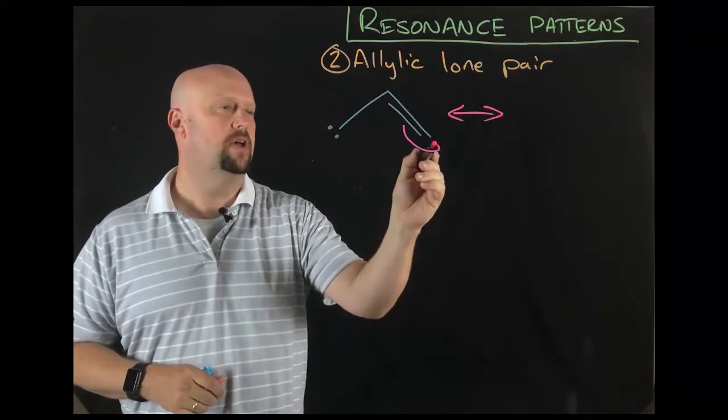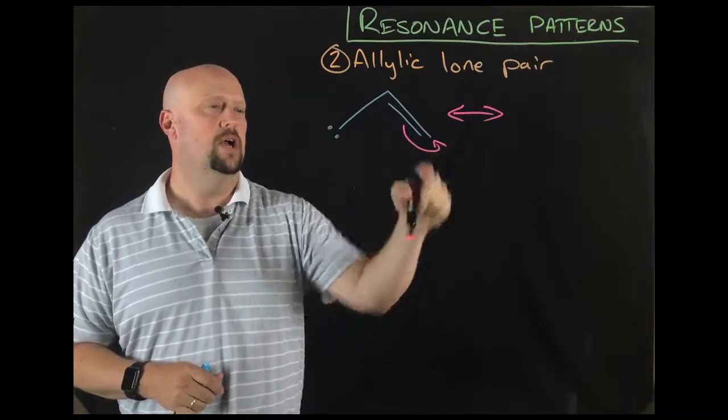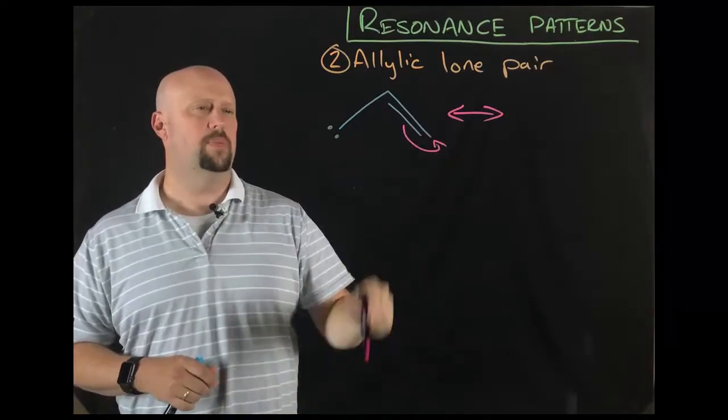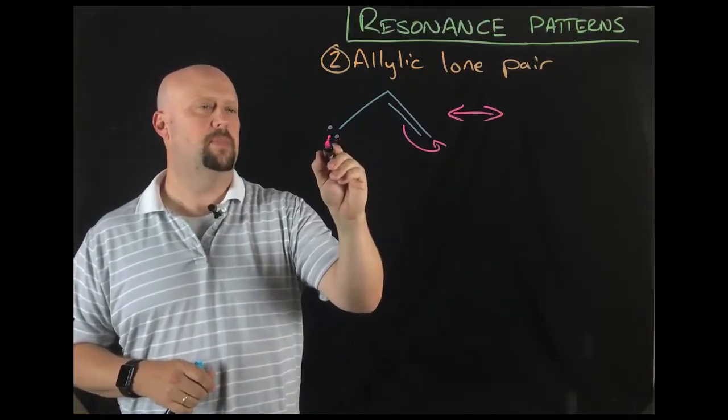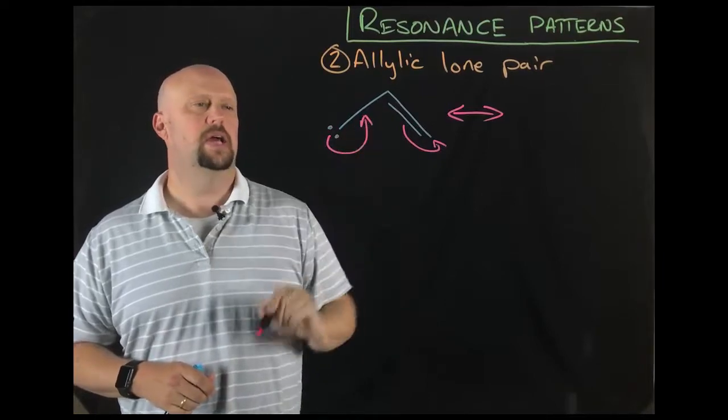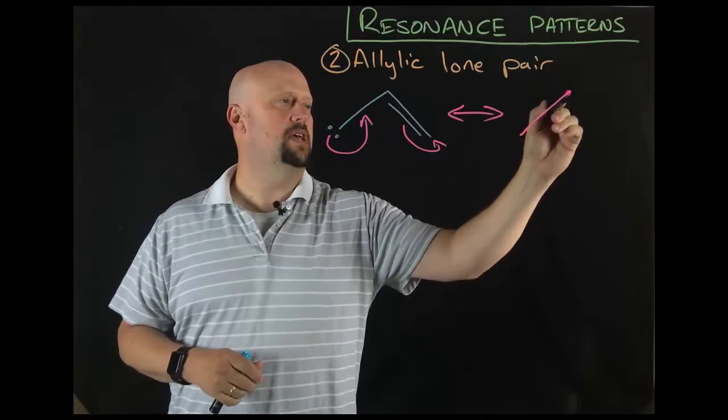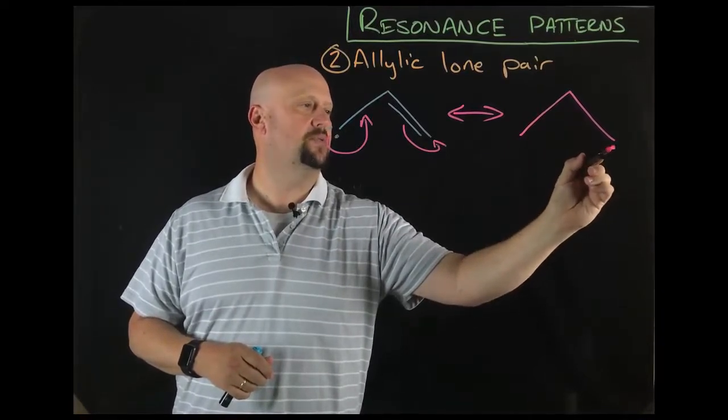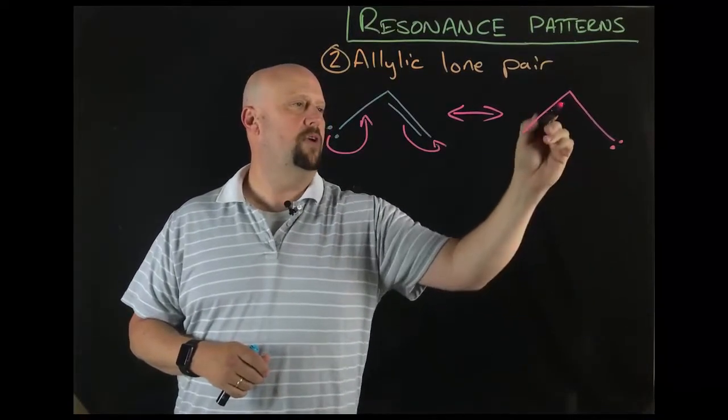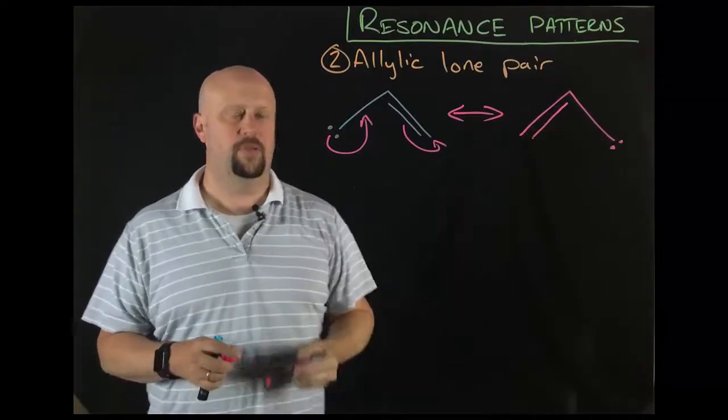Well, here's the way this works. This is actually going to require two curved arrows, whereas the allylic cation only required one. So I'm going to shift this to here, meaning that I'm going directly to that carbon over there. And then I'm going to take my lone pair, and I'm going to shift it over there. So two shifts. What does that then leave us with? Well, that leaves us with the second of our resonance structures. Double bond here, lone pair over here.